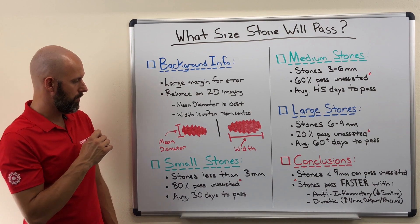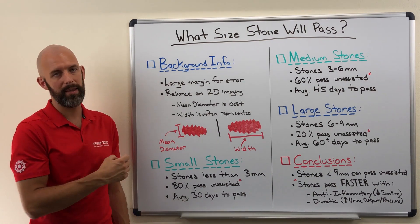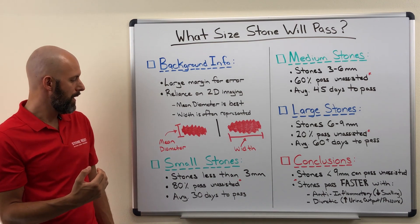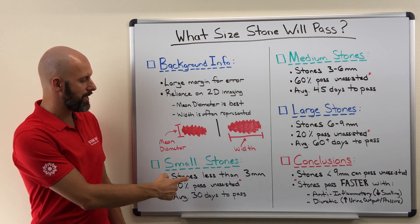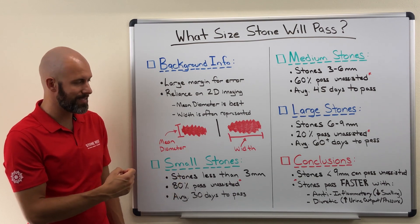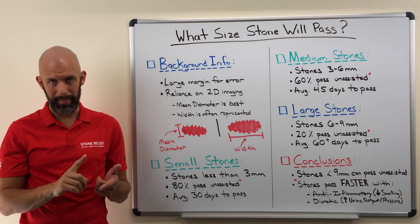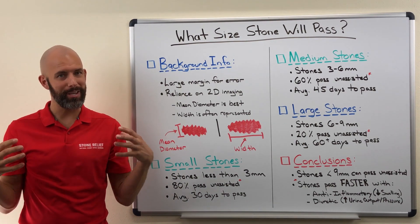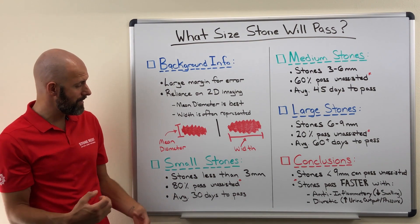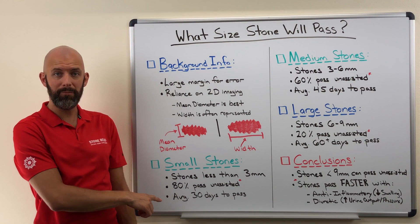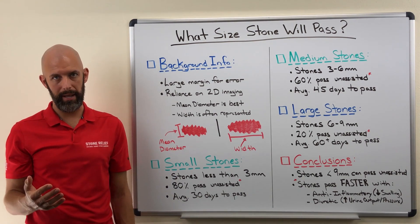Let's talk about what we define as small stones. A small stone is really anything less than three millimeters. According to the data, 80% of these stones are going to pass unassisted — meaning without any intervention, no medications — it is going to pass naturally on its own. The average timeframe for passing a small stone is roughly about 30 days.